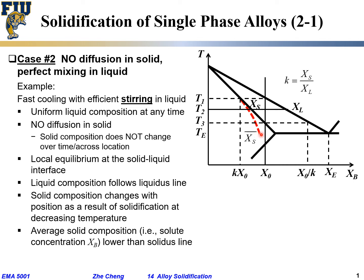What does this mean? Within the solid, the composition is not uniform. The earliest-formed material at the center has a lower solute composition, while the latest-formed material on the outside has a higher composition. With no diffusion to homogenize things, the composition is non-uniform, which can be bad for mechanical properties because material properties may change significantly from location to location.